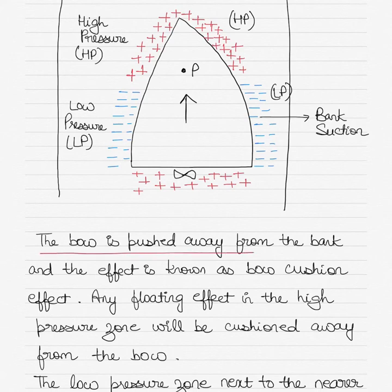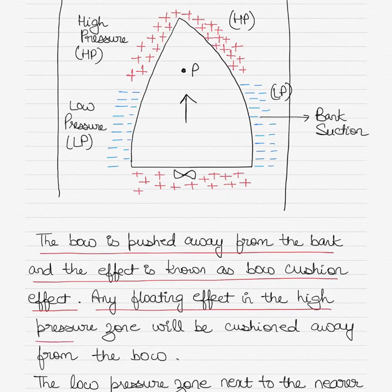The bow is pushed away from the bank and the effect is known as the bow cushion effect. Any floating effect in the high pressure zone will be cushioned away from the bow.